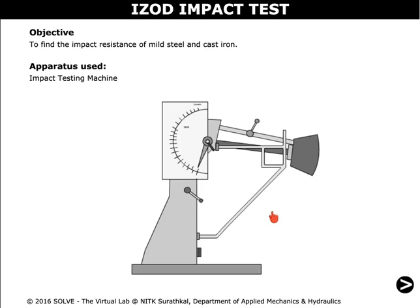Welcome to Lagupata from SOLV the virtual lab. The objective of this experiment is to find the impact resistance of mild steel and cast iron. The apparatus used is the impact testing machine. The setup can be seen here.